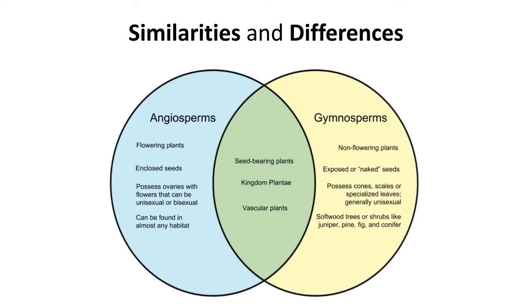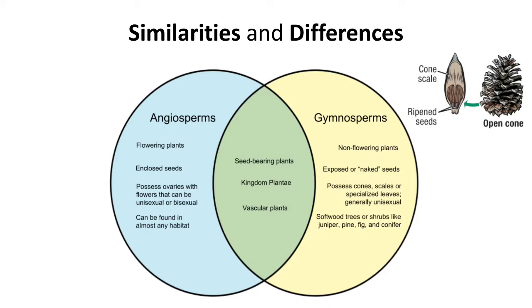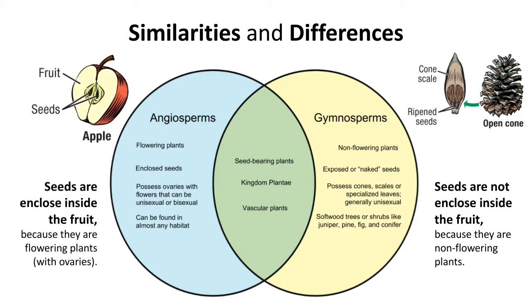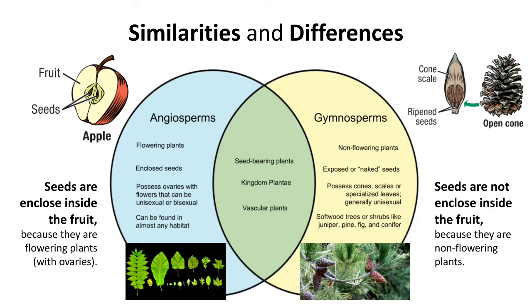This is the main similarity between gymnosperms and angiosperms. However, here also lies the main difference: seeds in gymnosperms are open seeds — they are not protected or surrounded by a fruit, which develops from flowers. The seeds in gymnosperms are found on leaves modified into a strobilus or cone. In angiosperms, seeds are closed because they come from a flower's ovary, which develops into a fruit that covers the seeds.